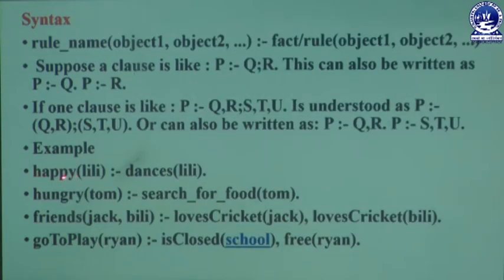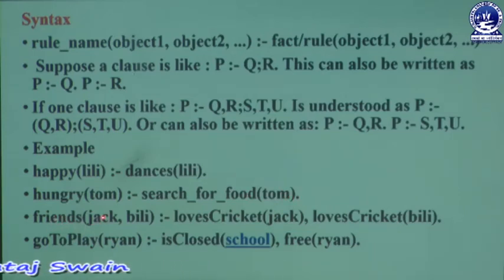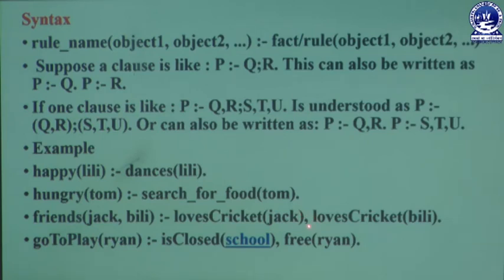Look at the sentence: Lily is happy if she dances. In Prolog rule syntax this is represented as: happy(lily) :- dance(lily). Next, hungry(tom) :- search_for_food(tom). Then friends(jack, billy) :- loves_cricket(jack), loves_cricket(billy) — here the comma operator represents conjunction. And go_to_play(rayyan) :- is_closed(school), free(rayyan).